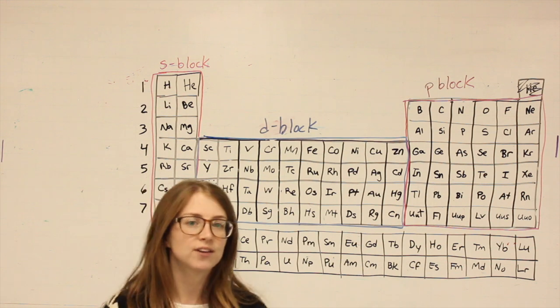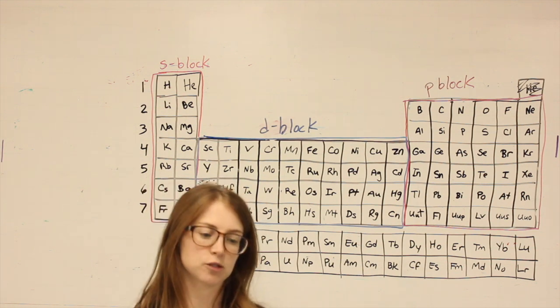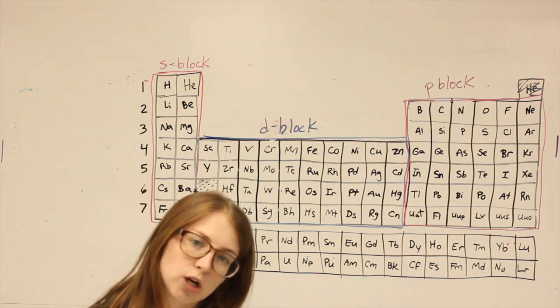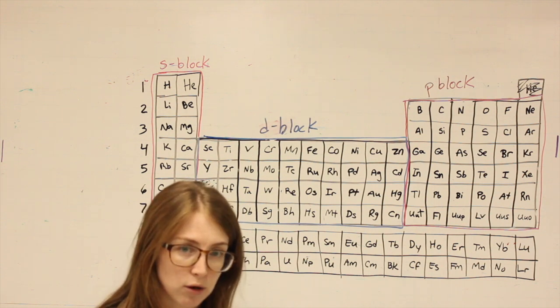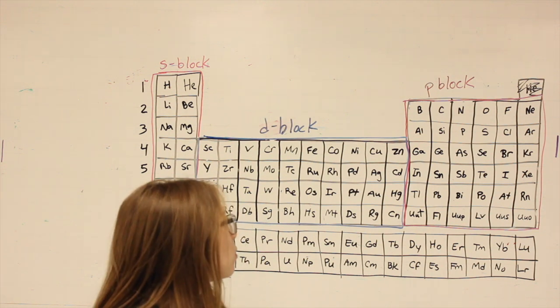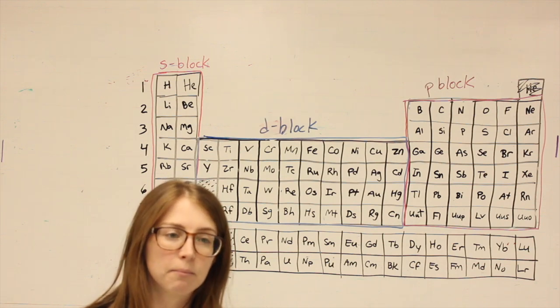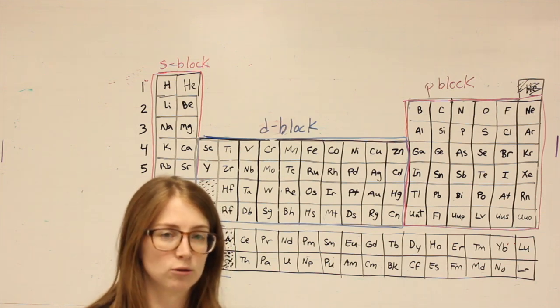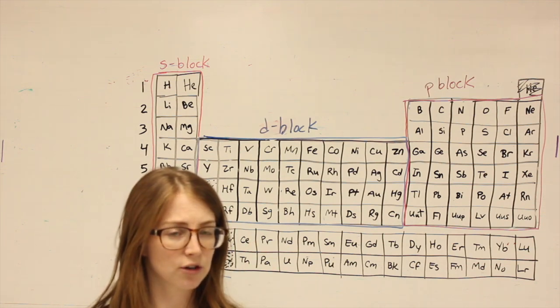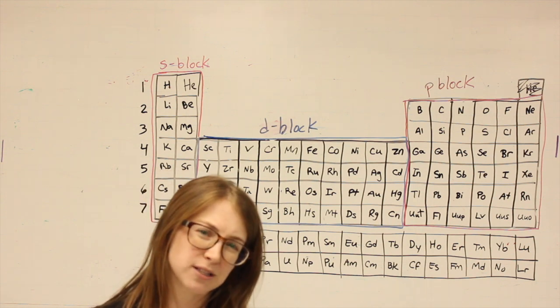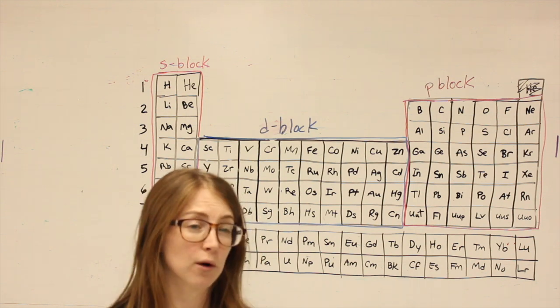Electron configurations are giving us an address, so to speak, telling us where the electrons in an atom are most likely to be found. We use this to tell us all sorts of different properties of the atom, but this video is just going to get down to how do you write an electron configuration. I'll make a different video that explains what it's all talking about and why it works.